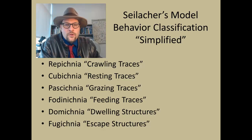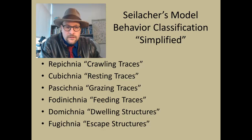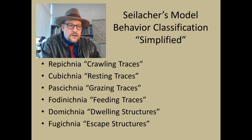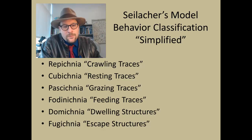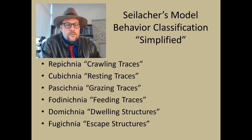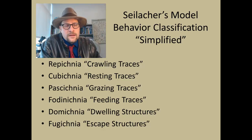This is a very good way of thinking about what the organisms were doing when they made the traces. Each category is given a unique ichnia name. We have the repichnia — crawling traces; cubichnia — resting traces; pascichnia — grazing traces; fodinichnia — feeding traces; domichnia — dwelling structures; and fugichnia — escape structures. They all represent a type of trace fossil by describing the behavior of the organism that was making it.